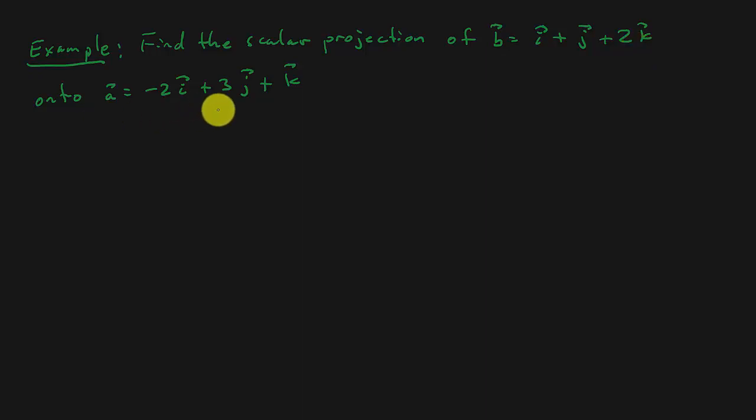B is I plus J plus 2K. A is negative 2I plus 3J plus K. So let's just go ahead and write the vectors with the angle brackets. So we've got vector A is equal to negative 2, 3, 1, and vector B is equal to the vector 1, 1, 2.